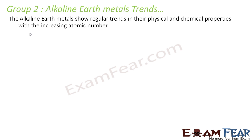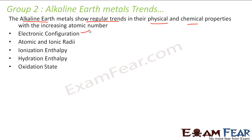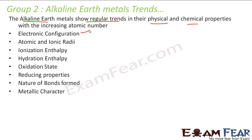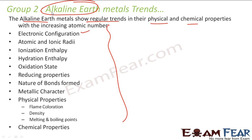Let us start with the trends. Similar to alkali metals, alkaline earth metals also show trends in their physical and chemical properties with increasing atomic number. We will discuss electronic configuration, atomic and ionic radius, ionization enthalpy, hydration enthalpy, oxidation state, reducing properties, nature of bonds, metallic and physical properties, flame coloration, density, melting and boiling points, and also chemical properties for the alkaline earth metals.